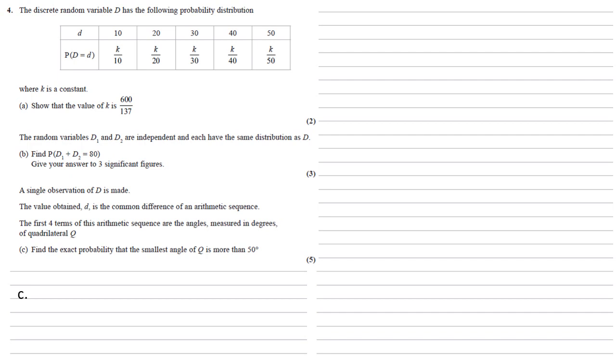We've got our arithmetic sequence A, A plus D, A plus 2D, and A plus 3D, where A is the first term and D is the common difference. We know that this adds up to the angles in a quadrilateral, so that equals 360. Simplifying this and collecting like terms, we get 4A plus 6D equals 360.